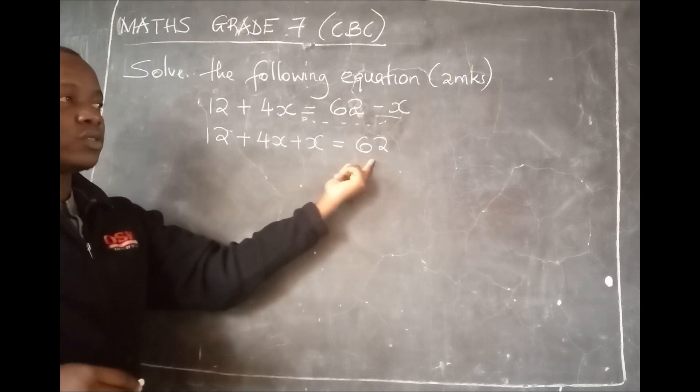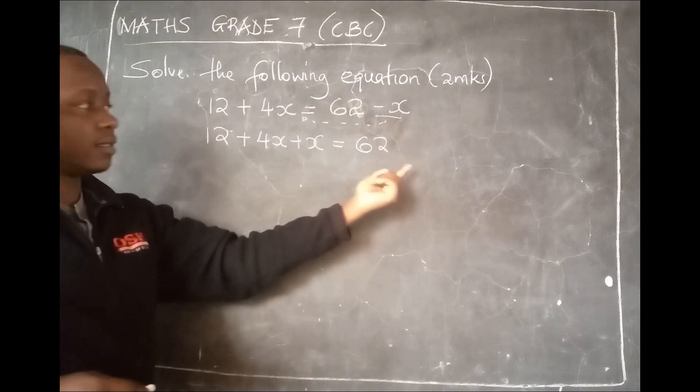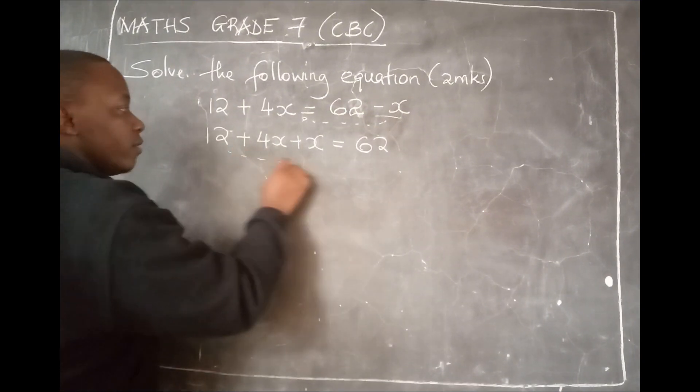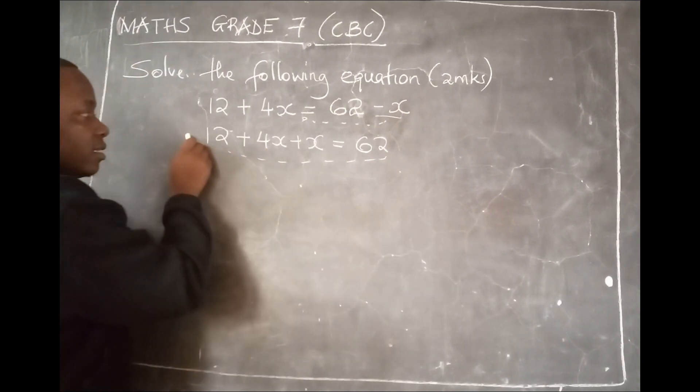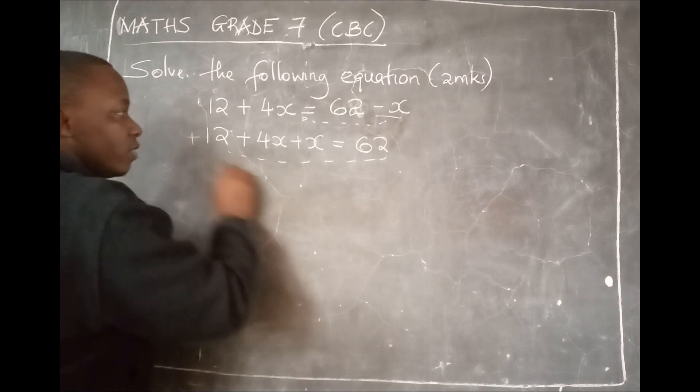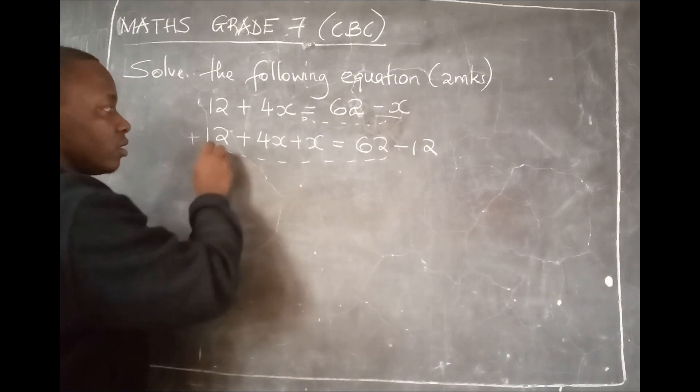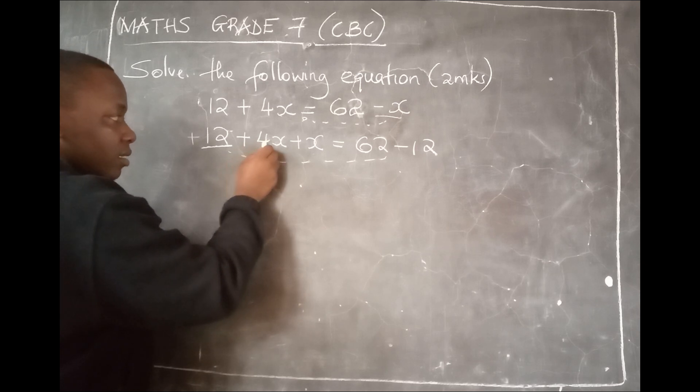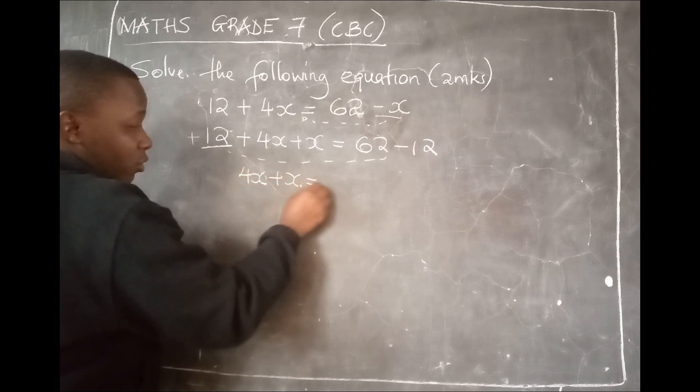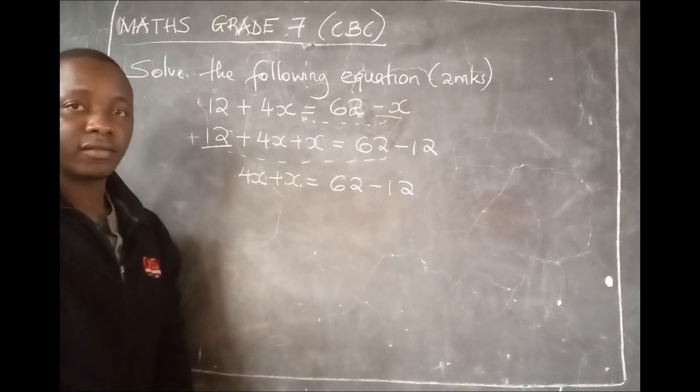The next step: this 62 is bigger than this 12, so you take this 12 to the other side. If I take this 12 to this side, plus 12 will be minus 12. So this 12 is not here anymore. It becomes 4x plus x equals 62 minus 12.